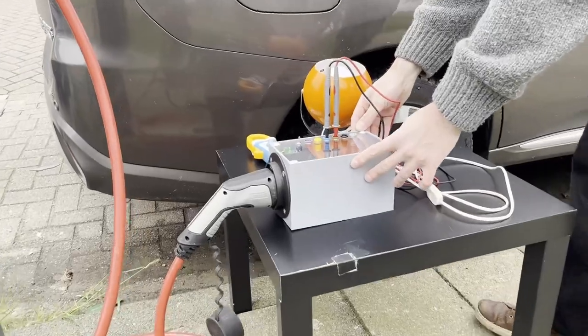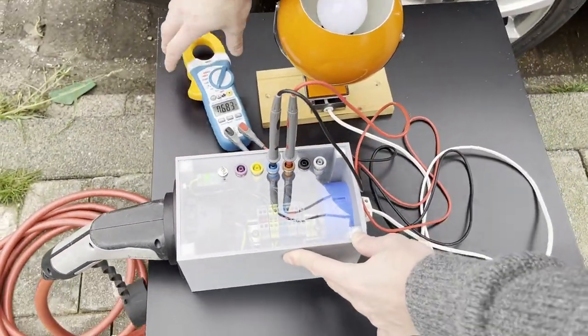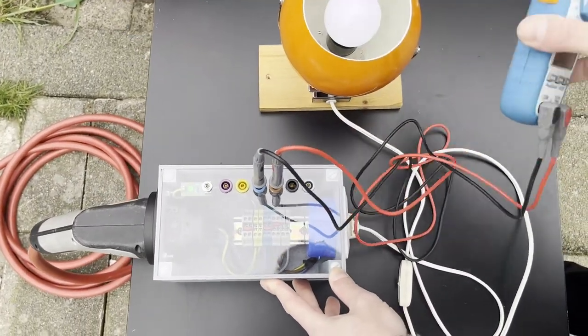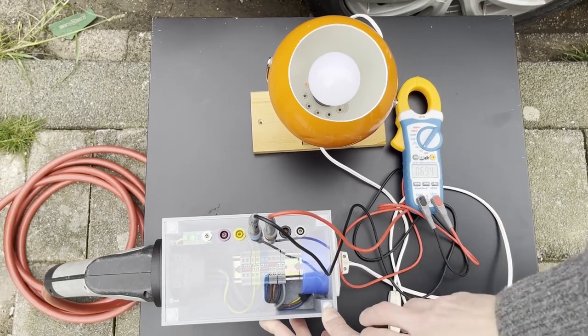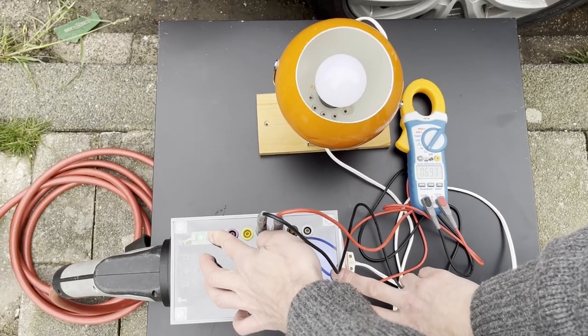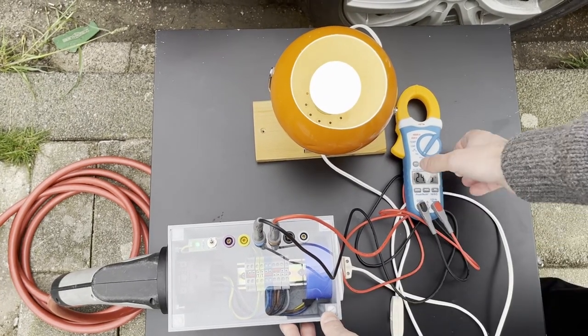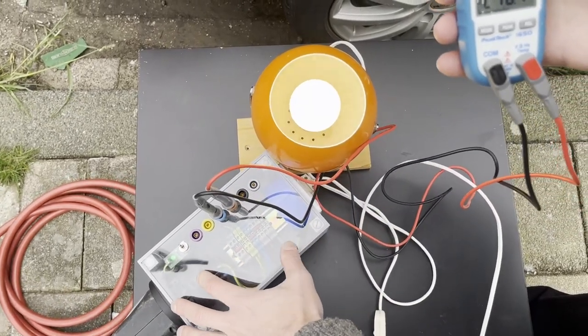And here's the most complete test setup in this video. As before, there is a control pilot circuit to simulate an electric vehicle and there is a socket outlet to power an appliance from the charging station. In addition, there are probes on the control pilot and power pins to be able to measure safely the operation of the charging station.